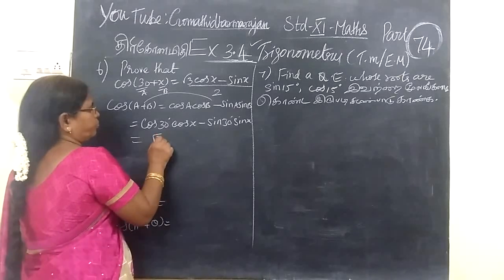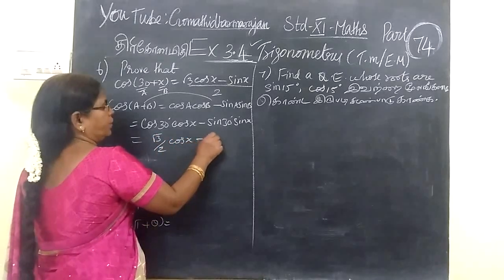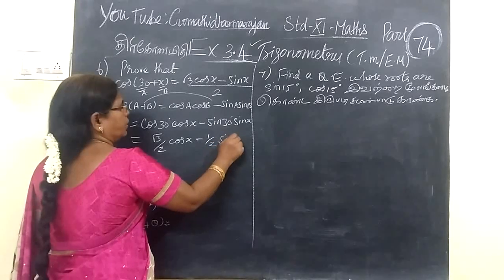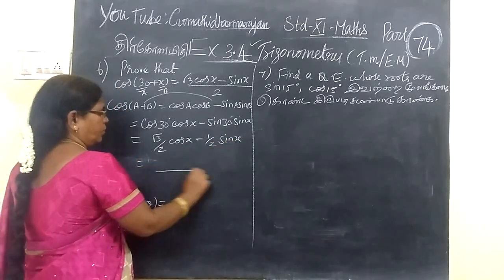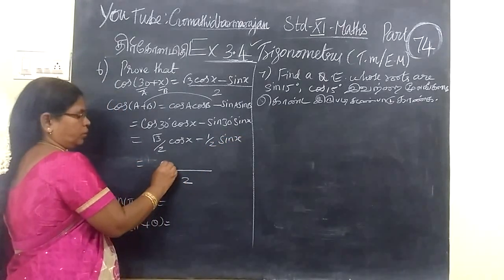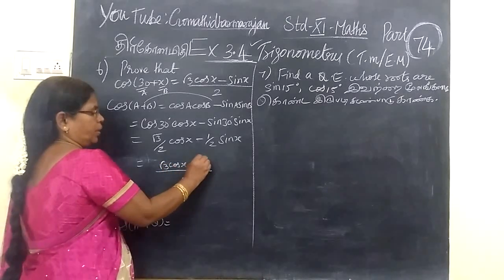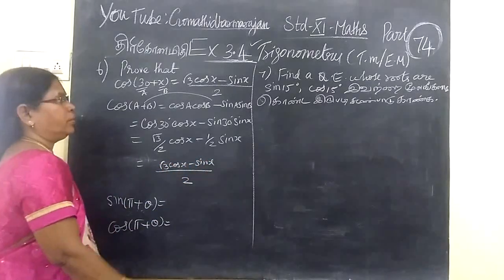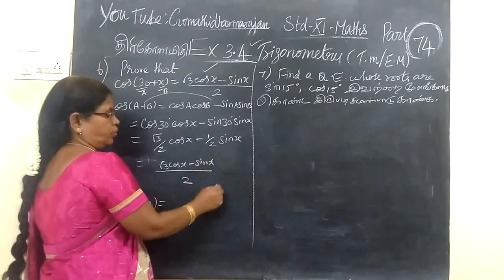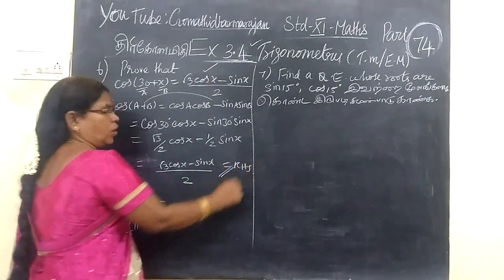Cos 30 gives root 3 by 2, then sin 30 gives 1 by 2. So root 3 cos minus, and we want the root. This part is complete and is equal to the right-hand side.